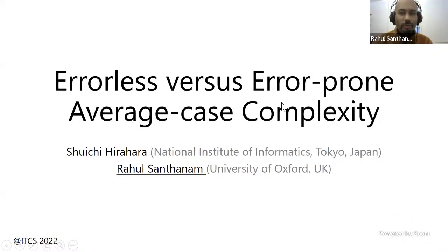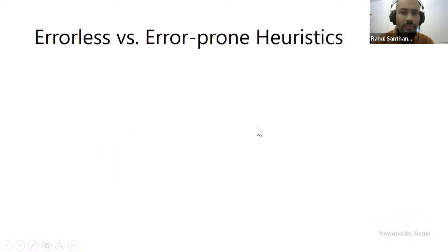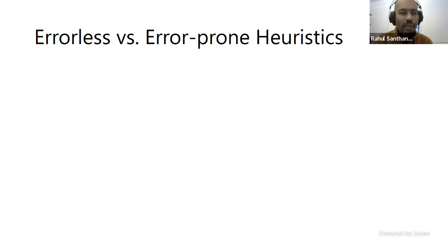I'm going to be speaking about errorless versus error-prone average case complexity. This is joint work.